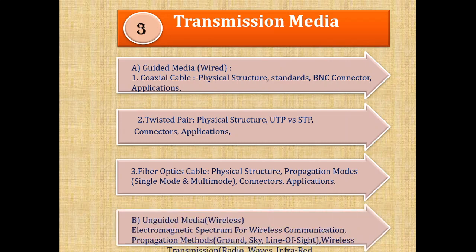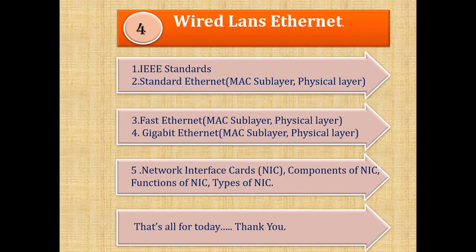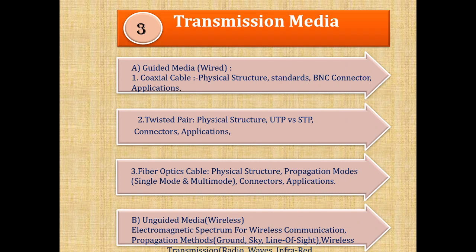The last topic in the lesson Transmission Media is Unguided Transmission Media, which we call Wireless Transmission Media. This wireless transmission media comes with different types depending upon their propagation methods such as Ground, Sky, and Line of Sight. The different types include Radio Waves and Infrared. The propagation methods define the type of transmission media, and we are going to discuss what is meant by ground propagation, sky propagation, and line-of-sight propagation.